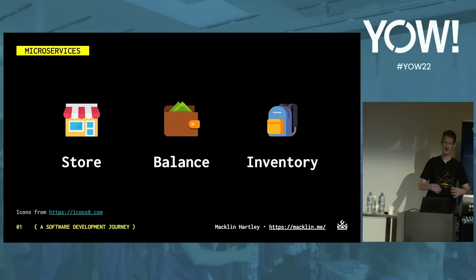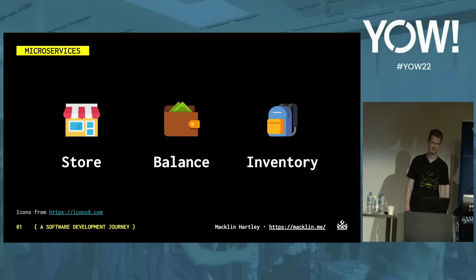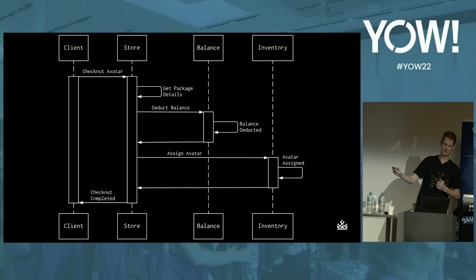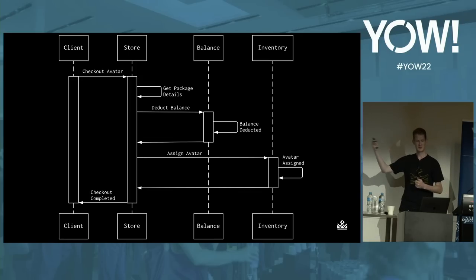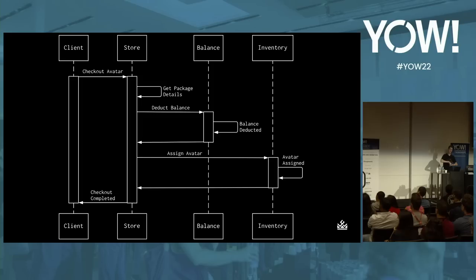The team agrees to split up the monolith and create boundaries between each domain concept. We have — and you'll recognize this language — the store, which tells us what things are for sale; the balance, which tells us how many coins we have; and the inventory, which tells us what things we've purchased and own. The client sends a checkout request to the store, the store sends a request to the balance service and deducts the balance, then sends a request to inventory to assign the avatar. Once it gets a response from inventory, it returns a response to the client that checkout is completed. We have our entire workflow in a single request lifecycle.